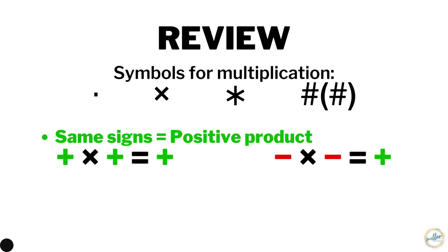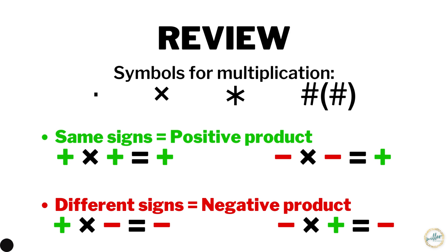We also remember that if we multiply two numbers with the same sign we get a positive product: positive times positive equals positive, negative times negative equals positive. And if you multiply two numbers with different signs you get a negative product, so positive times negative or negative times positive equals a negative number. These rules still apply for fractions and decimals.